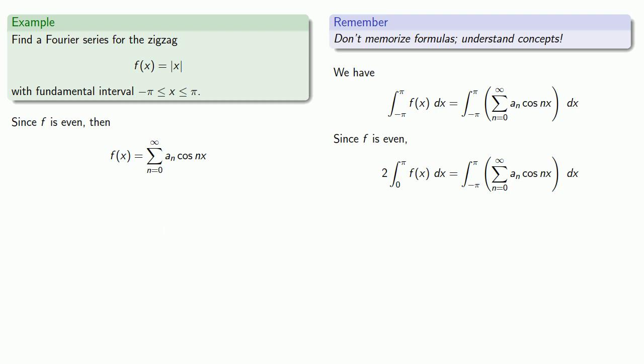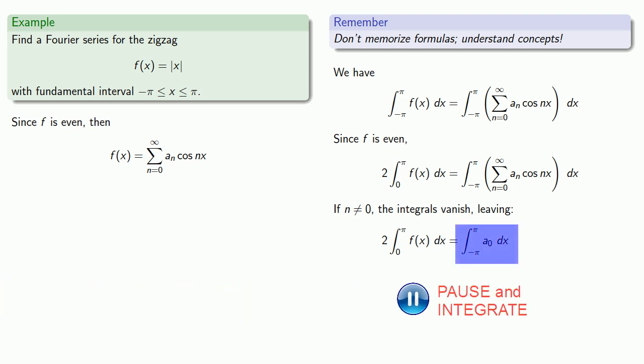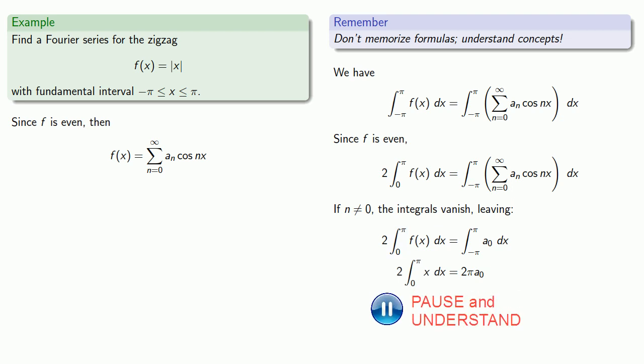Meanwhile, on the right-hand side, if n is not equal to zero, every one of these integrals will vanish, and that leaves just the a₀ value. On the right-hand side, we can find the value of that integral easily. Over on the left-hand side, remember our function over the interval between minus π and π is just the absolute value of x. And on the interval between zero and π, the absolute value of x is just x itself. So our integral becomes, which we evaluate, and find a₀ is π over 2.